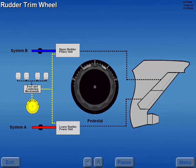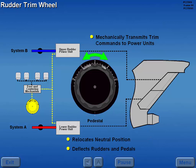The rudder trim wheel mechanically transmits trim commands to the rudder power units. Moving the trim wheel relocates the neutral position and deflects the rudders and rudder pedals.